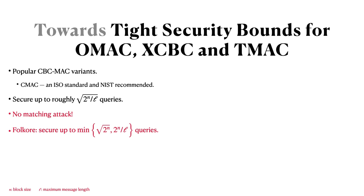Third, I will talk about the tightness of the existing bounds. Interestingly, there is no matching attack for the existing bound, and the general belief is that the bounds can be improved up to the minimum of square root of 2 to the N and 2 to the N over L. So the existing bounds have a quadratic degradation as compared to the folklore bound, and it was not clear up to now how it can be improved.